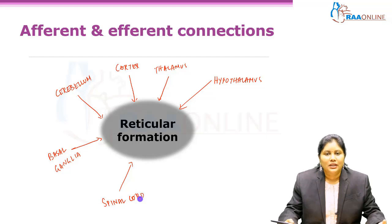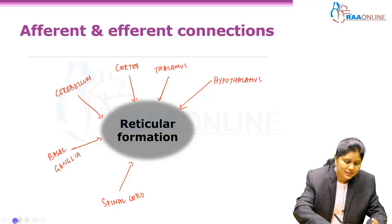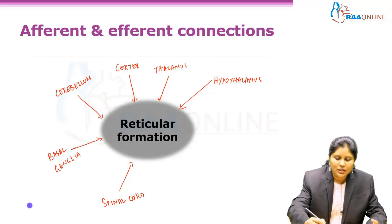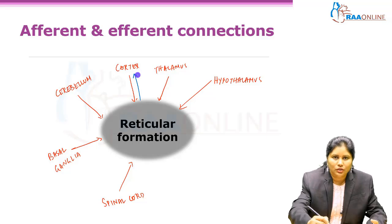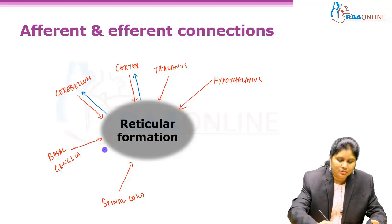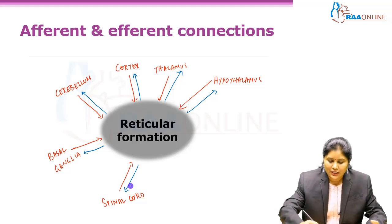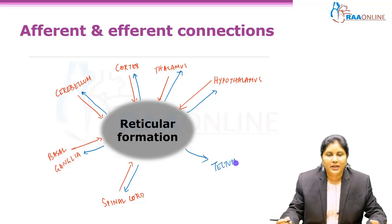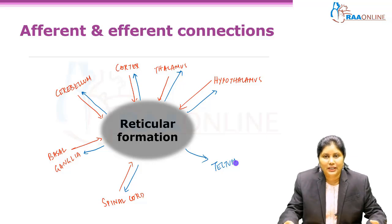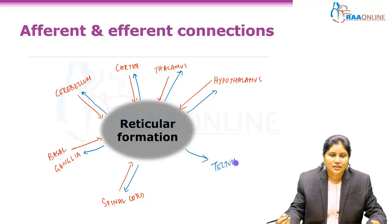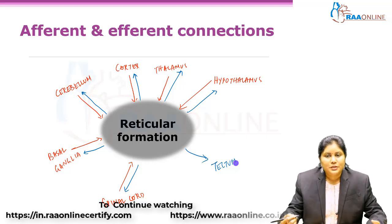What about efferent connections? Efferent connections from the reticular formation also go to all these areas — to the cortex, cerebellum, basal ganglia, thalamus, hypothalamus, spinal cord, and also to the tectum and other midbrain structures. Sensory areas related to specific sensory modalities are also connected to the reticular formation.